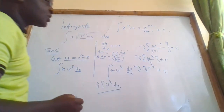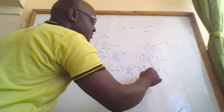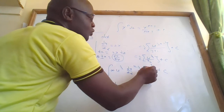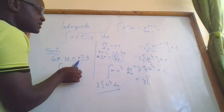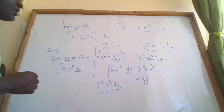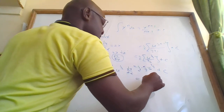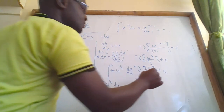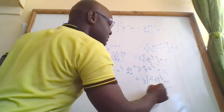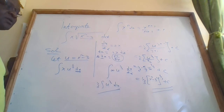We now replace u. Our u was x squared minus 3. So the final answer is one third times (x squared minus 3) raised to three over 2, plus the constant of integration. Thank you for watching and listening.